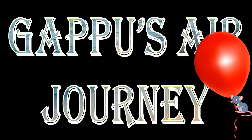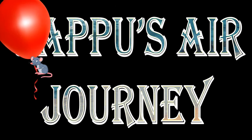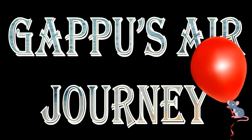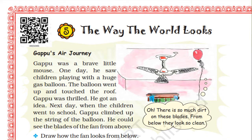Air journey. Children, do you know who is Gappu? Gappu was a brave little mouse. Let us see about his journey. One day, he saw children playing with a huge gas balloon. The balloon went up and touched the roof. Gappu was thrilled and got an idea. Next day, when the children went to school, Gappu climbed up the string of the balloon.